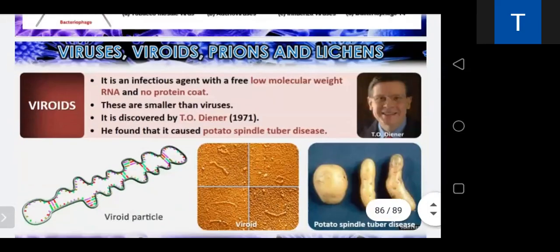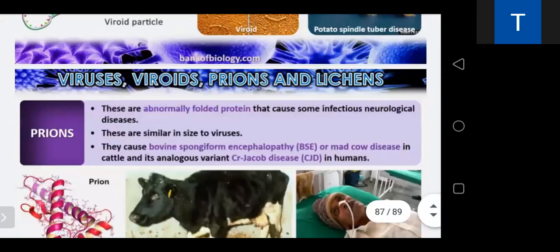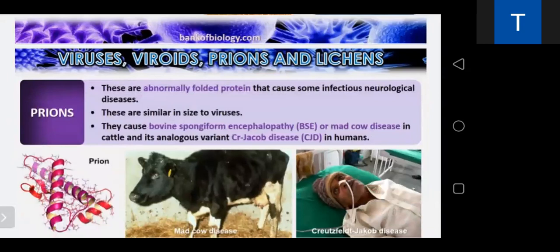Prions are obligate parasites made up of glycoprotein only — they have no DNA or RNA. They are abnormally folded proteins that cause infection, mainly neurological disease. They are similar in size to viruses. Prions are not affected by proteases, nucleases, temperatures up to 800°C, UV radiation, or formaldehyde. They cause bovine spongiform encephalitis or mad cow disease in cattle, and Creutzfeldt-Jakob disease in humans, by accumulating in nervous tissue and causing its degeneration.